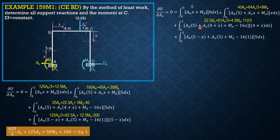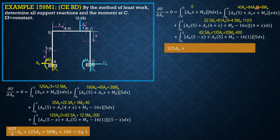Evaluating: the first integral is 0; the second is 40Ah + (64/3)Av + 8Ma; the third is 22.5Ah + (61/3)Av + 4.5Ma − 112/3; and the last is 62.5Av + 25Ma − 400. Combining like terms gives Equation 2: 125Ah + (500/3)Av + 37.5Ma = 1312/3.